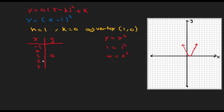Let's complete the table to check our answer. Where x = 0: (0 - 1)² = 1. Where x = -1: (-1 - 1)² = (-2)² = 4. On the other side, we get the same points: (2 - 1)² = 1², which is 1; and (3 - 1)² = 2² = 4. So we have symmetry here as well.